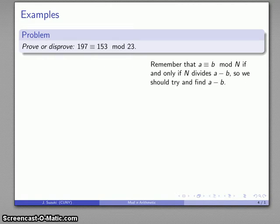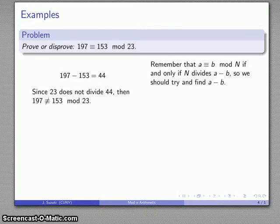The easiest way to check this is to see what a minus b actually is. 197 - 153 = 44, and we note that 23 does not divide 44, so the congruence is not true.